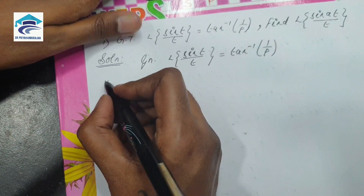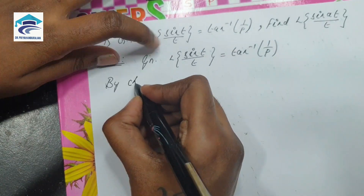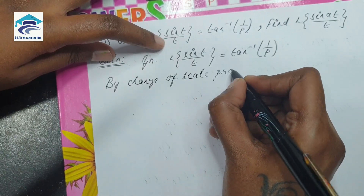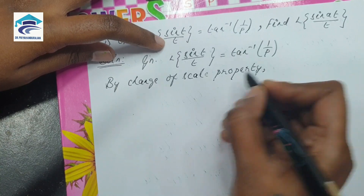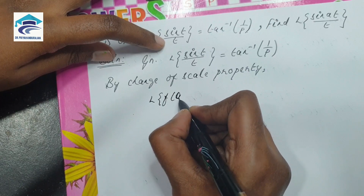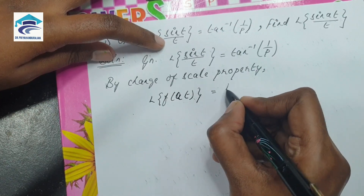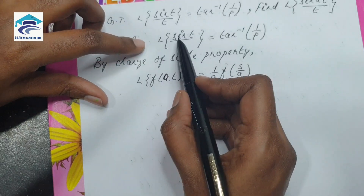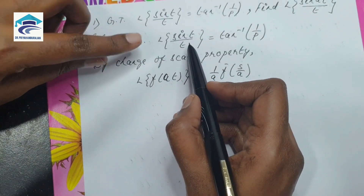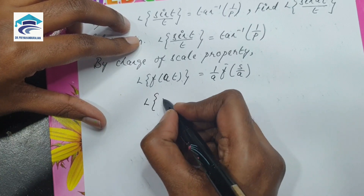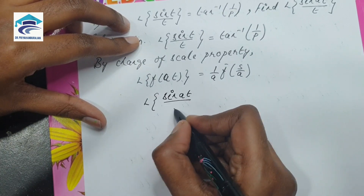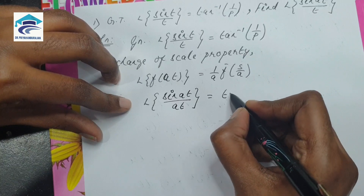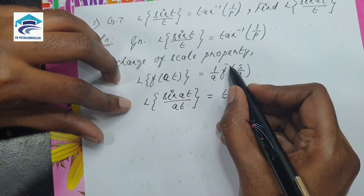What is the change of scale property? L of f(at) is equal to (1/a) F̄(s/a). What is given here is L of sin(t)/t. If we apply at in place of t, this becomes L of sin(at)/(at). Using the property, this is equal to (1/a) times F̄(s/a), and since F̄(s) is tan inverse of 1/p, F̄(s/a) will be tan inverse of (1/p) evaluated at s/a.